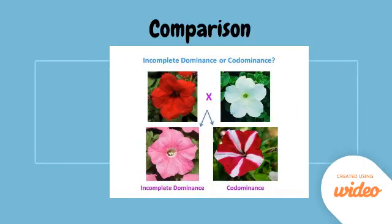Before we go on, let's have a direct comparison between incomplete dominance and codominance, because they are the two that seem the most similar. In incomplete dominance, it's an intermediate between the two parents. The second flower has both the white and the red expressed, which tells us that it's codominant, because the colors didn't blend.